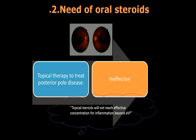The golden concept in uveitis treatment is that topical steroids will not reach effective concentration for inflammation beyond the anterior uveitis phase. Logically, for vitritis and posterior pole diseases, topical steroids alone cannot be used for titrating active inflammation.